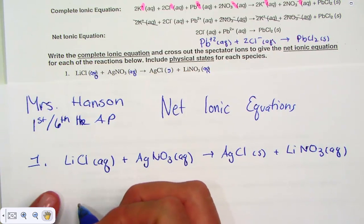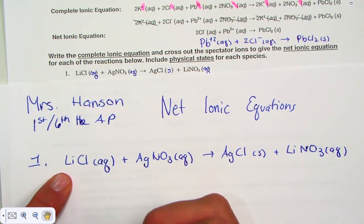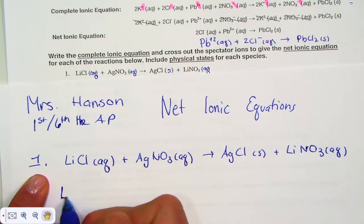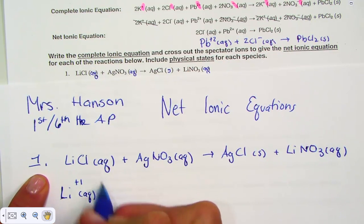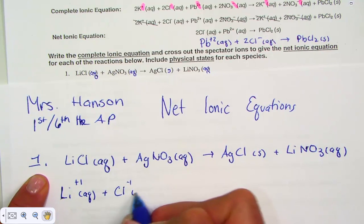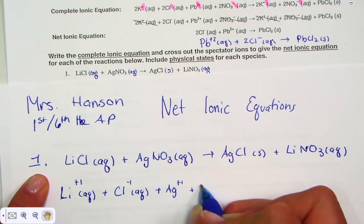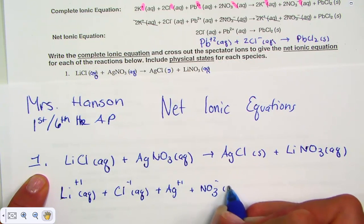The complete ionic dissociates all aqueous ionic compounds. Are we balanced? Yeah. Lithium ion aqueous plus a chloride ion aqueous plus an aqueous ion of silver and an aqueous ion of nitrate.